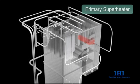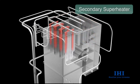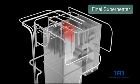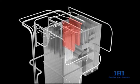The superheater consists of three sections. The steam is passed through the primary superheater, secondary superheater, and final superheater, exchanging heat with the combustion gas. Increasing the steam temperature at the superheater outlet makes more efficient power generation possible.